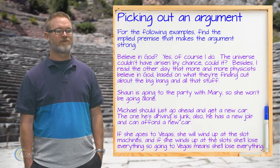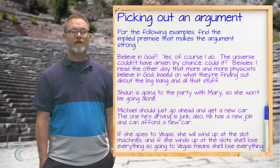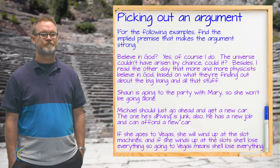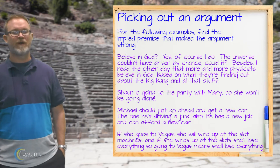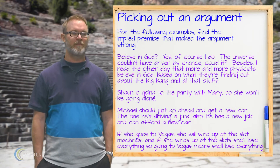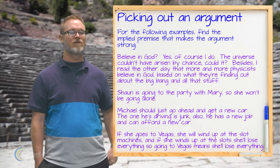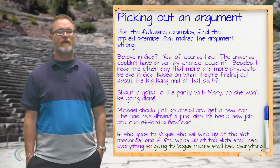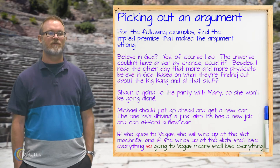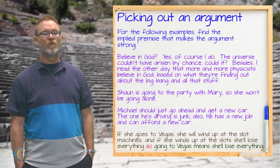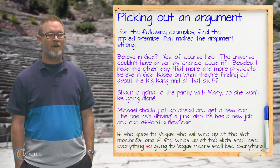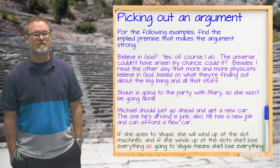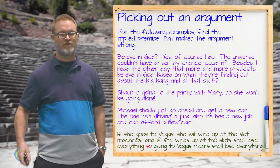Next: if she goes to Vegas she'll wind up at the slot machines, and if she winds up at the slots she'll lose everything. So going to Vegas means she'll lose everything. Here the 'so' indicator marks the conclusion: going to Vegas means she'll lose everything. We have two premises: if she goes to Vegas she'll wind up at the slots, and if she winds up at the slots she'll lose everything.